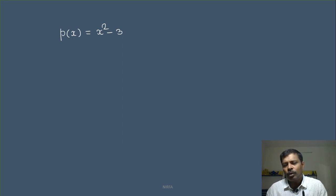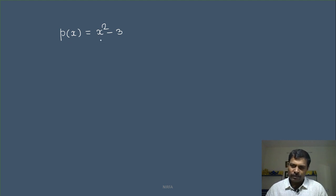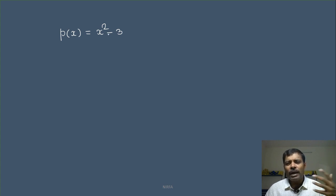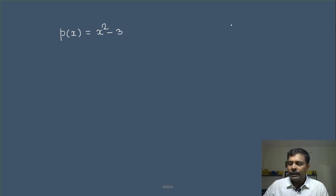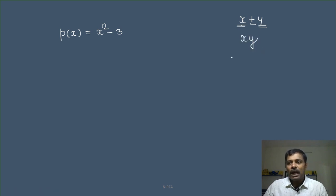Polynomial को हाँ या ना बोलने के लिए पहले तो आपको terms देखना पड़ते हैं — कितने terms हैं? ये एक term, ये दूसरी term। Minus sign के इधर कुछ लिखा है, इधर कुछ लिखा है। Plus और minus से separate होने वाले को terms बोलते हैं। अगर मैंने यहाँ x लिखा, यहाँ plus, और यहाँ y लिखा — तो यह first term है और यह second term है। अगर plus की जगह minus भी हो तो भी यही। लेकिन जब x और y के बीच में न plus है न minus, तो वहाँ multiplication होता है।